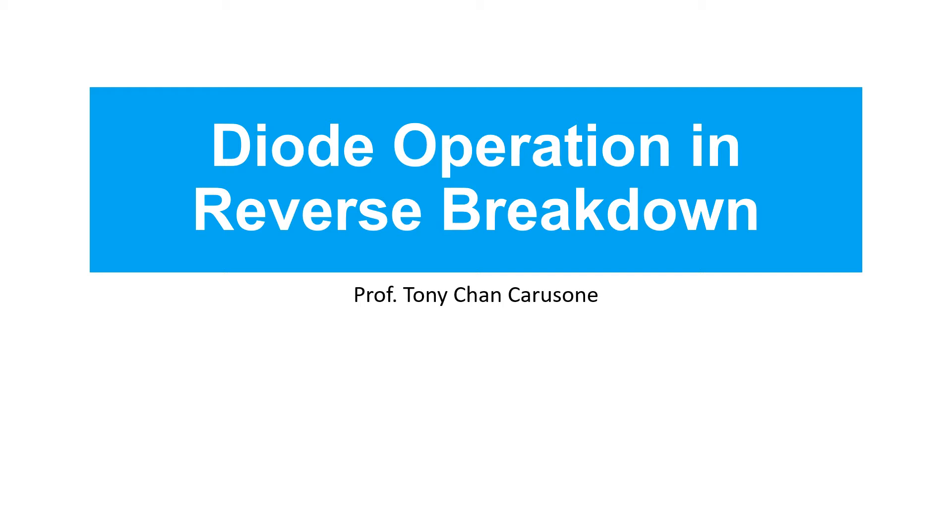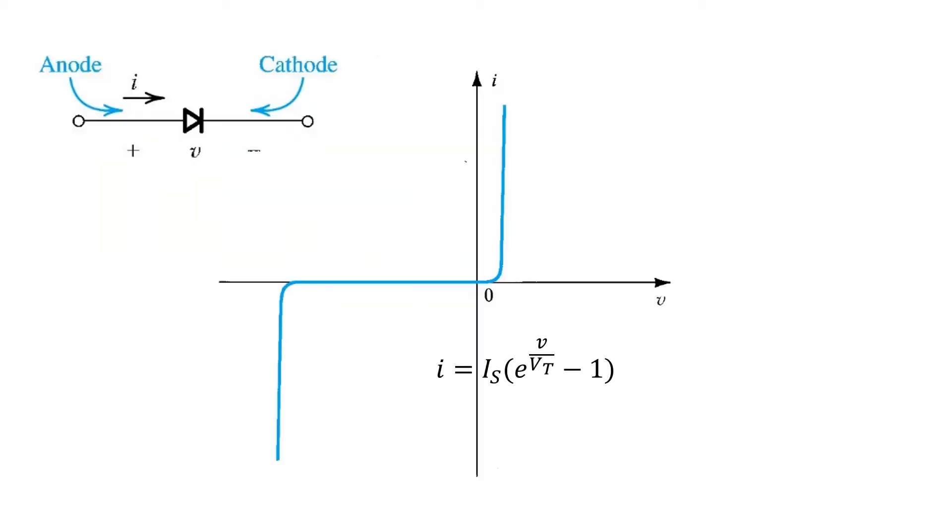In this video, we'll learn about diode operation and reverse breakdown. A reminder that the diode's operating characteristic under both reverse bias and forward bias is governed by this exponential relationship shown here.